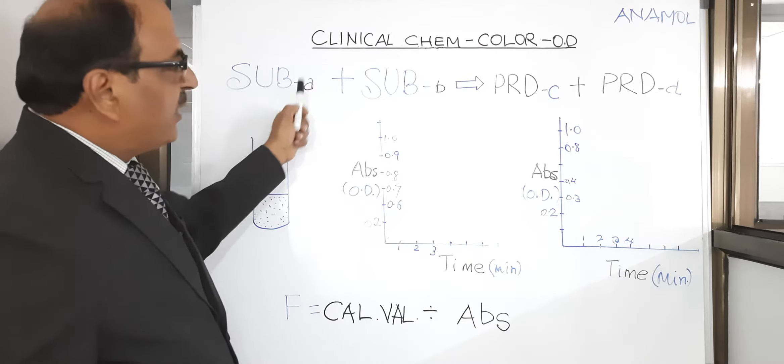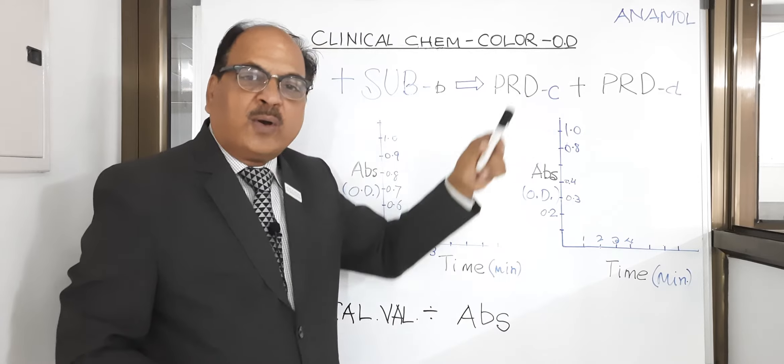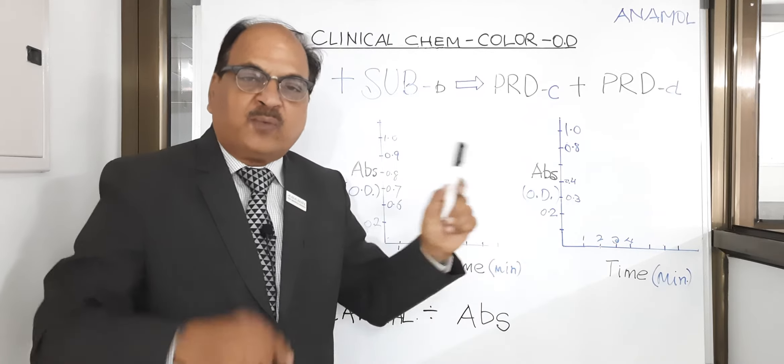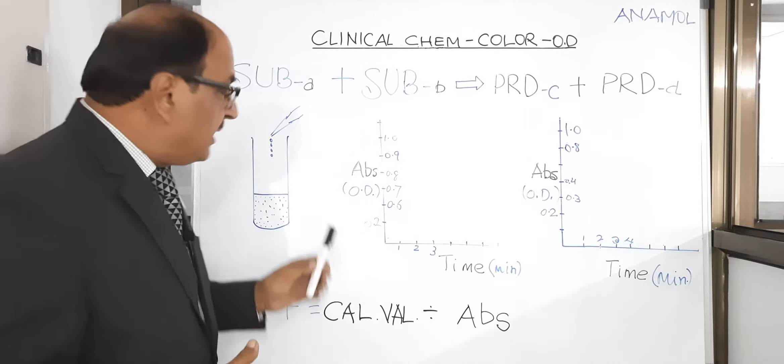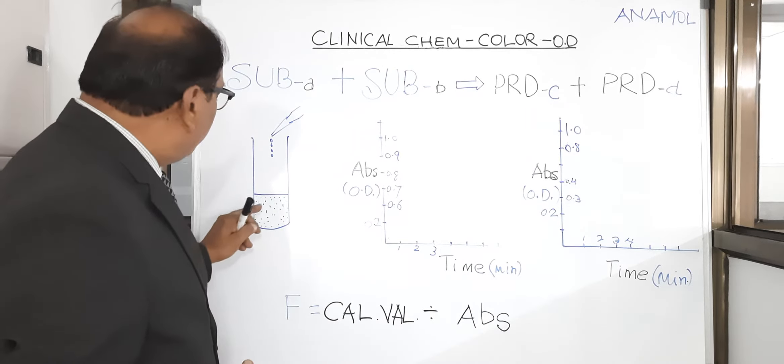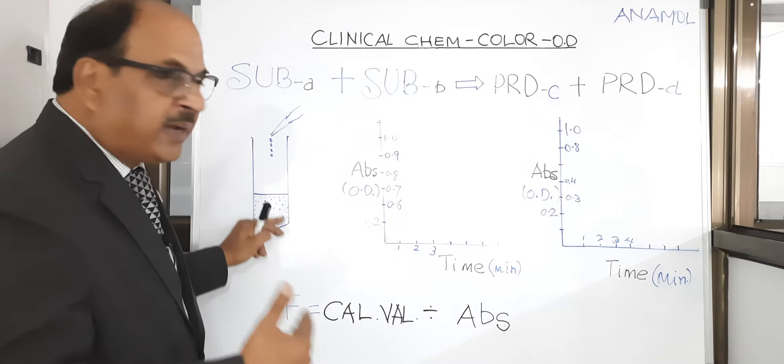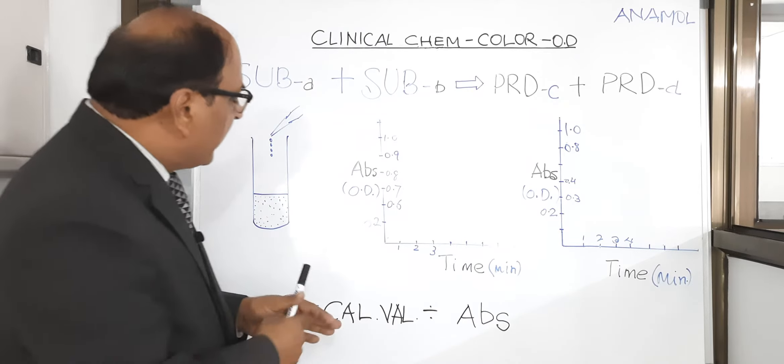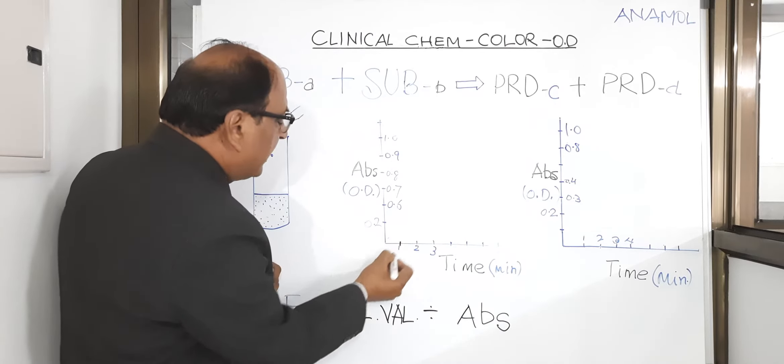Let's take an example of alkaline phosphatase. Alkaline phosphatase is paranitrophenyl phosphate producing paranitrophenol. Paranitrophenol is a yellow color compound at 405 nanometer. When the reaction just begun, there is very little amount of color, but as the reaction progresses it becomes more yellow.